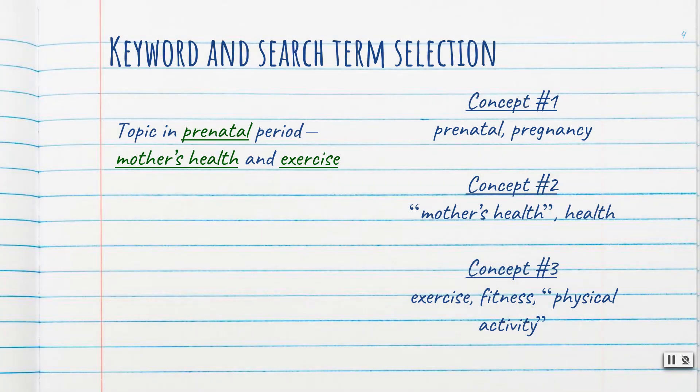When searching in library research databases, you'll need to use keywords or main concepts as your search terms. Let's take a look at one of the example topics from your assignment packet. The topic is: during the prenatal period, the mother's health and exercise. The first step will be to determine synonyms or related concepts, because one author may use the term 'prenatal' and another may say 'pregnancy.' It's a good idea to think about the terms that will be most helpful for finding articles about your topic.